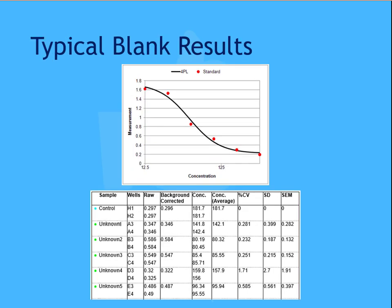This next dataset displays a more expected blank value of 0.01, so the curve appears above the x-axis with positive y values. The sample table shows positive background-corrected results.